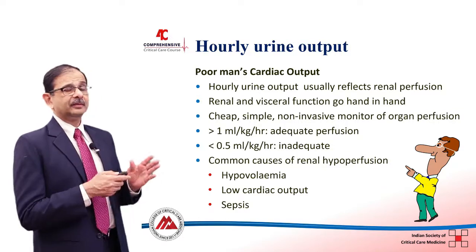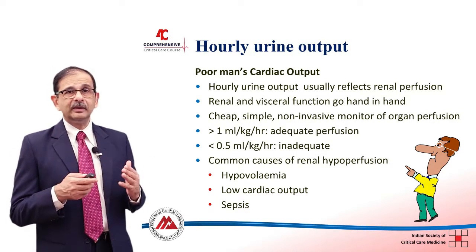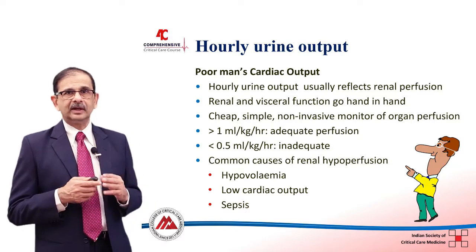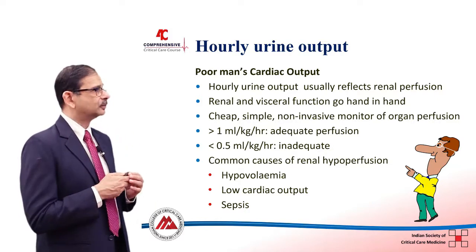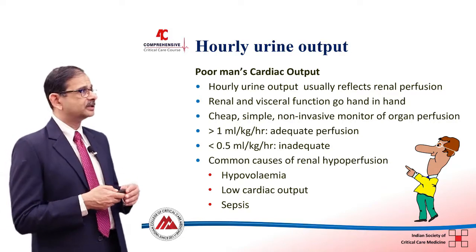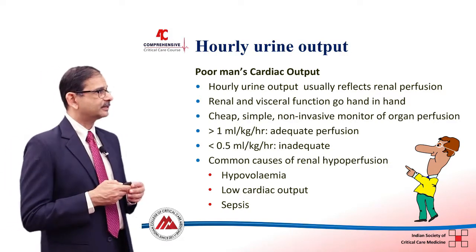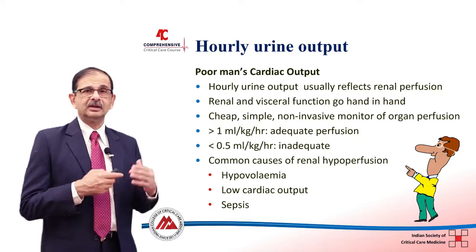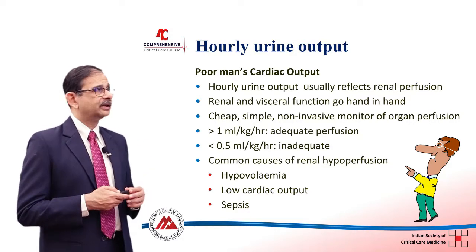However, if the patient is on diuretics or dopamine, we lose the hourly urine output as a reliable indicator of cardiac output. The common causes of reduced renal perfusion, as we are all aware, are hypovolemia, low cardiac output, and sepsis. All patients must have hourly urine output monitored when they are in the ICU.